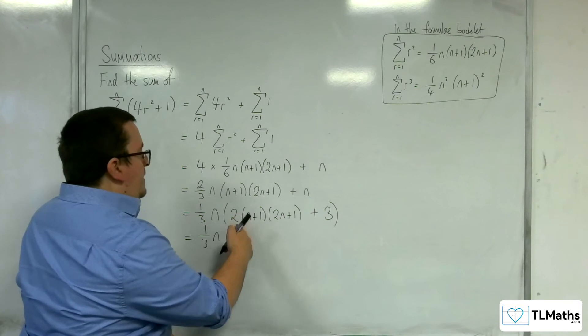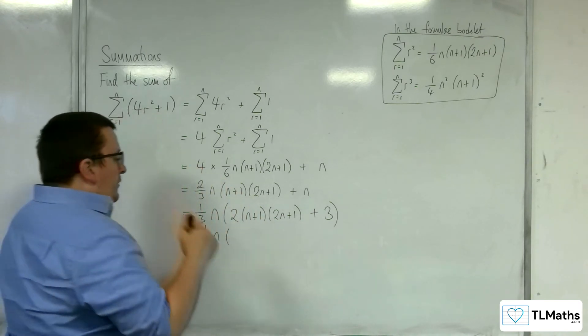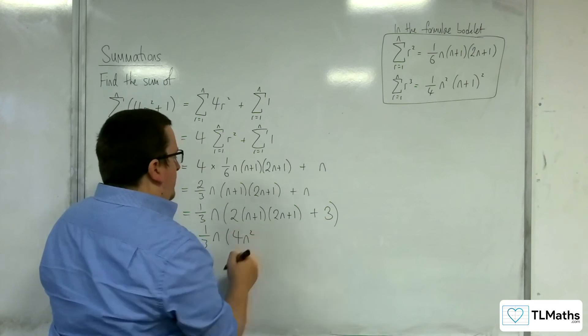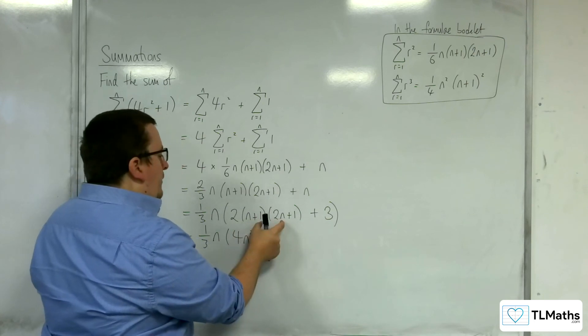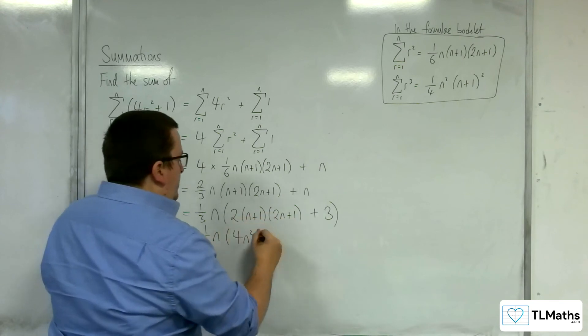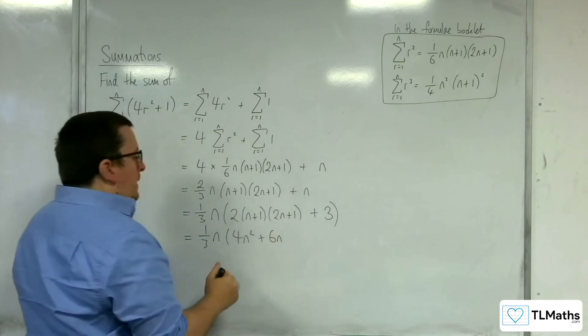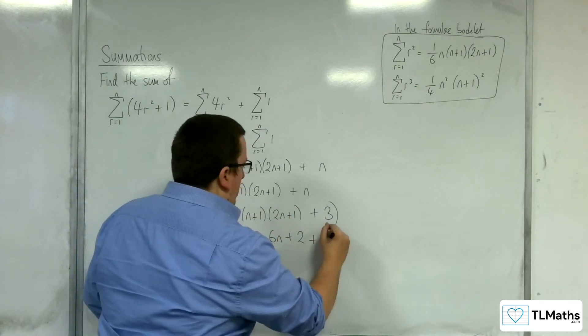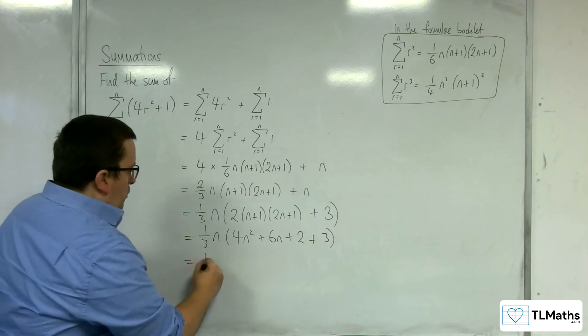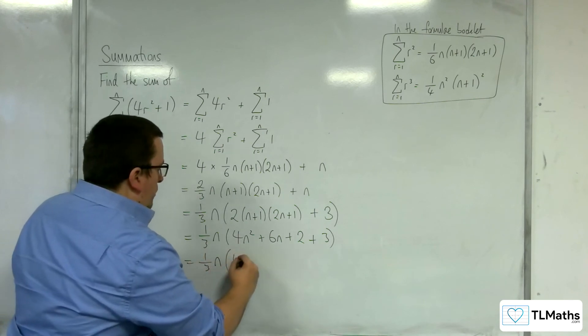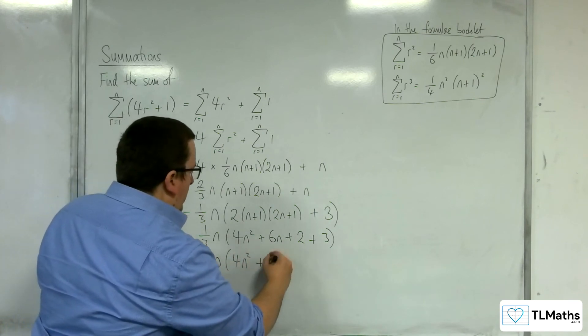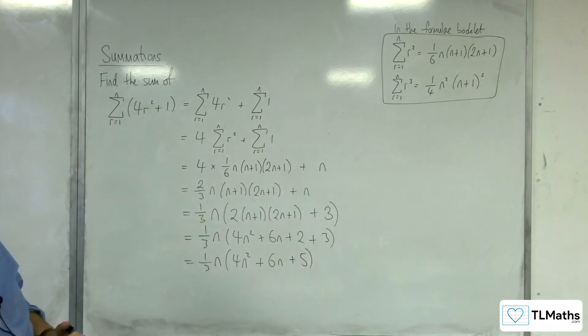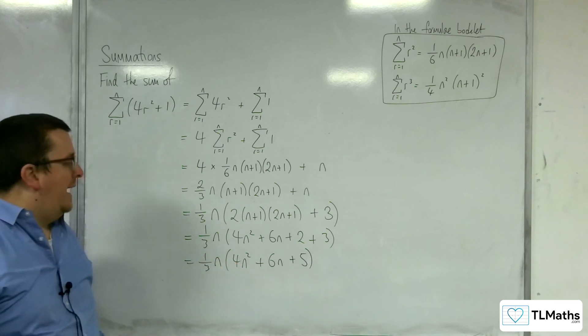So now I want to expand this out. So we've got the 2 times n times 2n. So that would be 4n squared. We're going to get 2n plus n, so 3n, times 2, so 6n. And then 1 times 1 times 2, times 2, and we've still got that plus 3 on the end. So 1 third n, 4n squared, plus 6n, plus 5. And so that is as good as I can really get it.